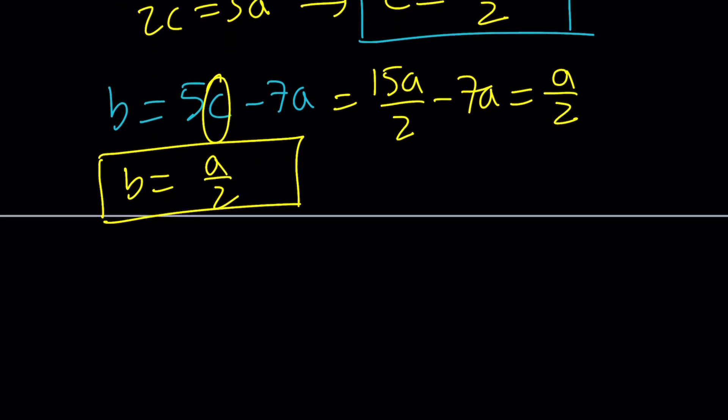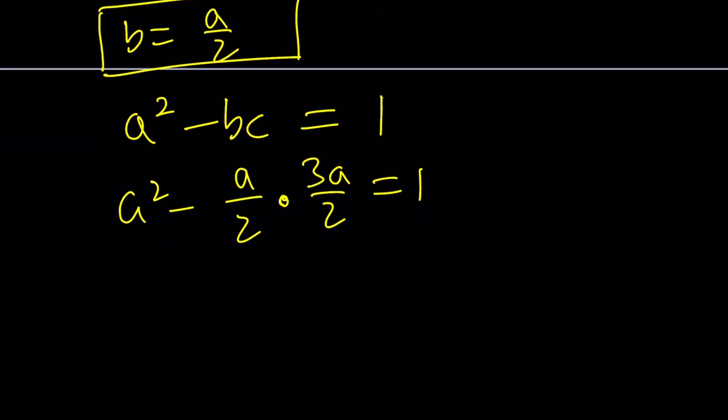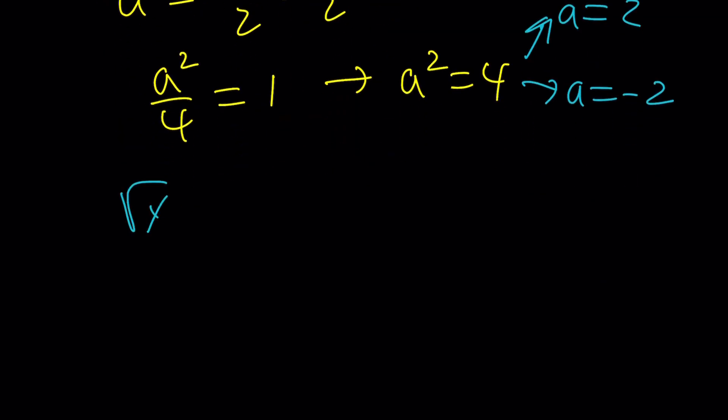Now, let's go ahead and use that in one of the equations. It doesn't matter which one. So, let's just use the first one. a squared minus bc is equal to 1. Replace b with a over 2 and c with 3a over 2 and solve for a. This is going to give you 3a squared over 4. So, think about 1 minus 3 fourth, which is 1 fourth. So, this is going to give you a squared over 4 equals 1 or a squared equals 4. Or a is 2 or negative 2. There are two possibilities for a, but remember what we said at the very beginning. That was square root of x is equal to a. So, if square root of x is equal to 2, we're good. But if square root of x is equal to negative 2, we're not good because x is not going to be real.